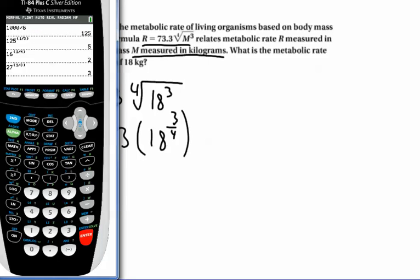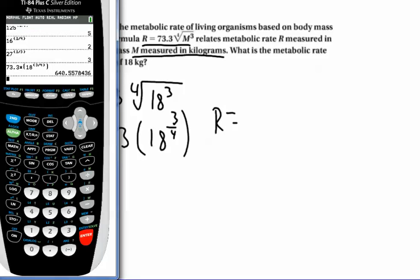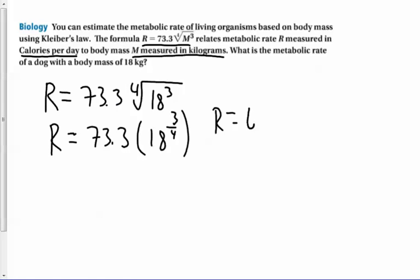You take 73.3 times 18 to the 3/4 power. And I get 640.5. So R is 640.5. And that is calories per day. So that means that a dog weighing 18 kilograms should take in 640.5 calories per day. So why don't you pause the video and try the next problem.